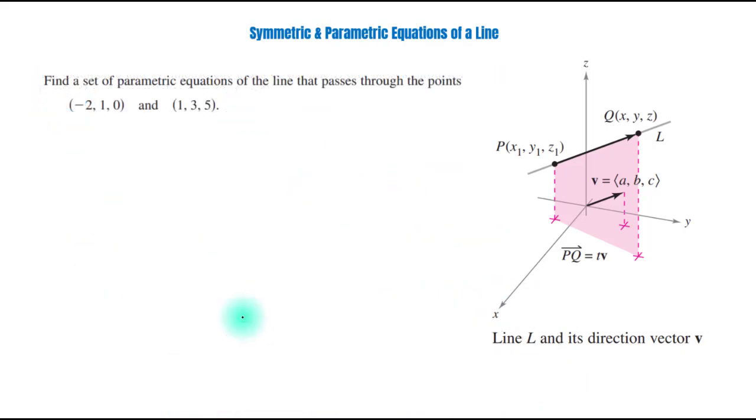In the next problem, we have to find a set of parametric equations of a line that passes through the points (-2, 1, 0) and (1, 3, 5). This is our point P and this is Q.